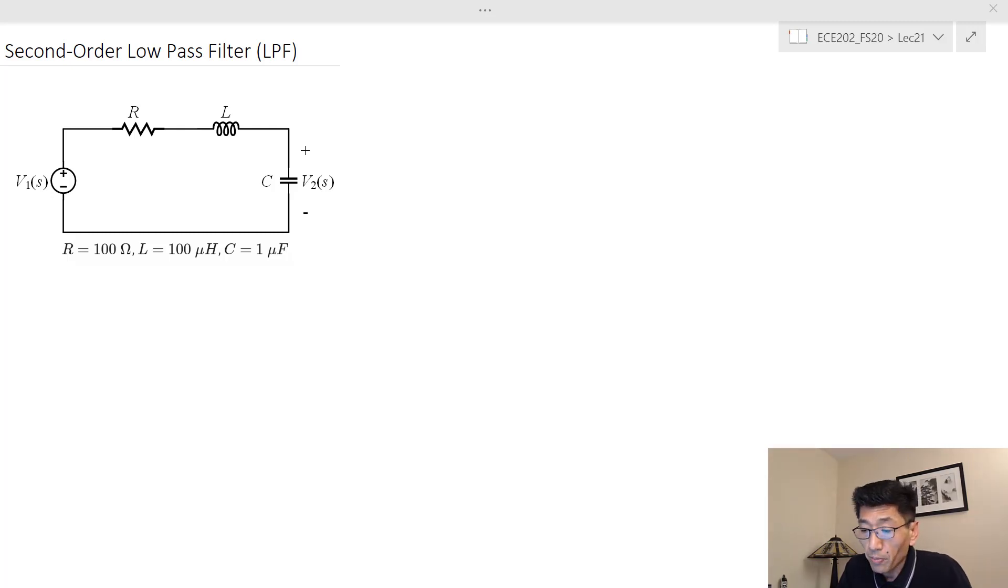Let's look at the second order low pass filter and first let's look at the transfer function T_v(s), that's equal to V₂(s) over V₁(s). Before we do all the mathematical derivations, let's think about this physically.